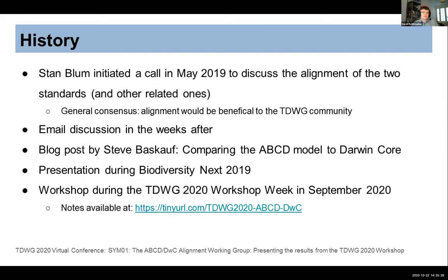There were discussions in the weeks after on the email list, most notably a blog post by Steve Baskoff comparing the ABCD model to Darwin Core. The work of that group was then presented last year at Biodiversity Next in Leiden. Not much happened within the group until it was time to start planning the TDWG workshop week, when we said we needed to continue on this topic — and so we had this workshop.